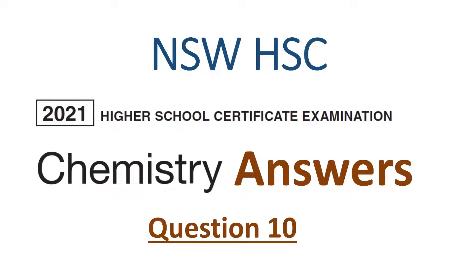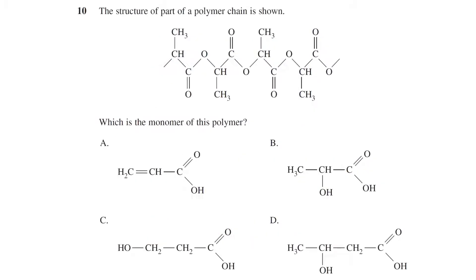In this video, we will go over the answer to question 10 of the 2021 NSW HSC Chemistry Exam. The question states, the structure of part of a polymer is shown. Which is the monomer of this polymer? This is followed by four possible options of monomers.